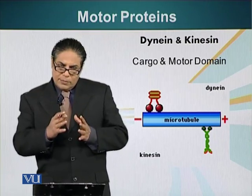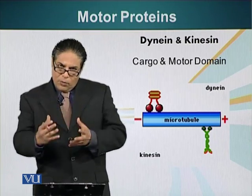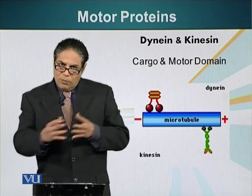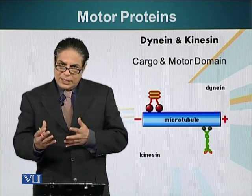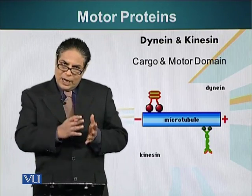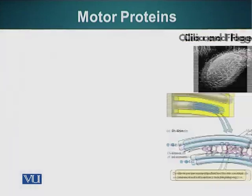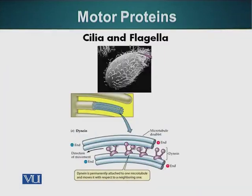These motor proteins can not only transport cargo like vesicles. In the case of flagella or cilia, both domains of these motor proteins are attached to microtubules. So a motor protein will have a microtubule attached to its cargo domain and the motor domain also attached to another microtubule which is adjacent.